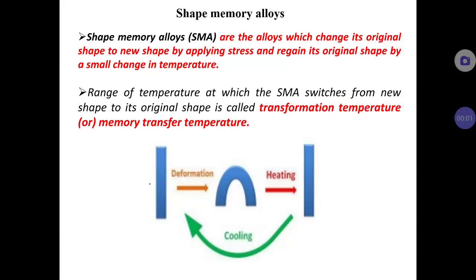In this lecture I am going to explain about shape memory alloys. As the name indicates, the shape is in its memory — it can regain its shape and size by a small temperature change. For example, there is a needle made up of shape memory alloy. If you want to insert medicine into a vein, that needle has to be soft enough so that it can bend and pierce into the vein.